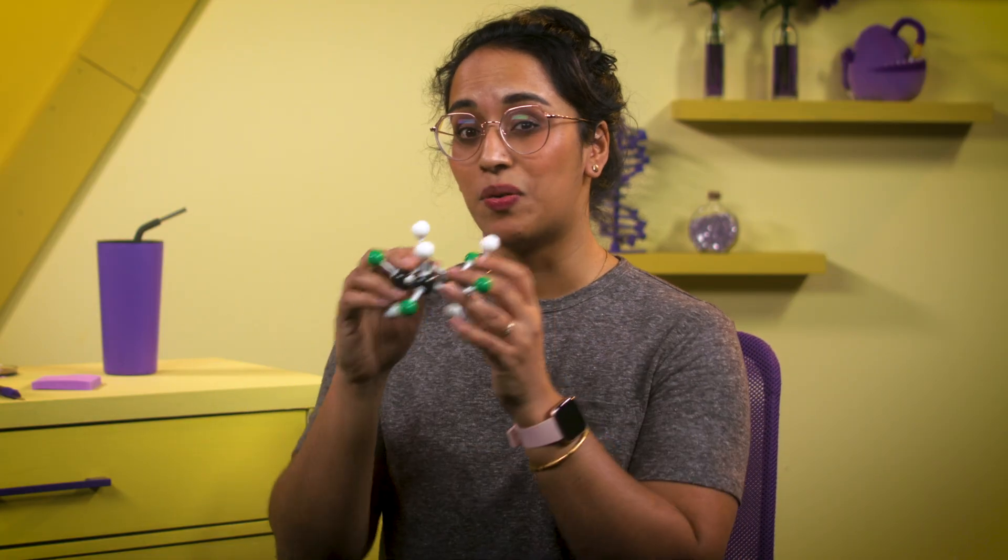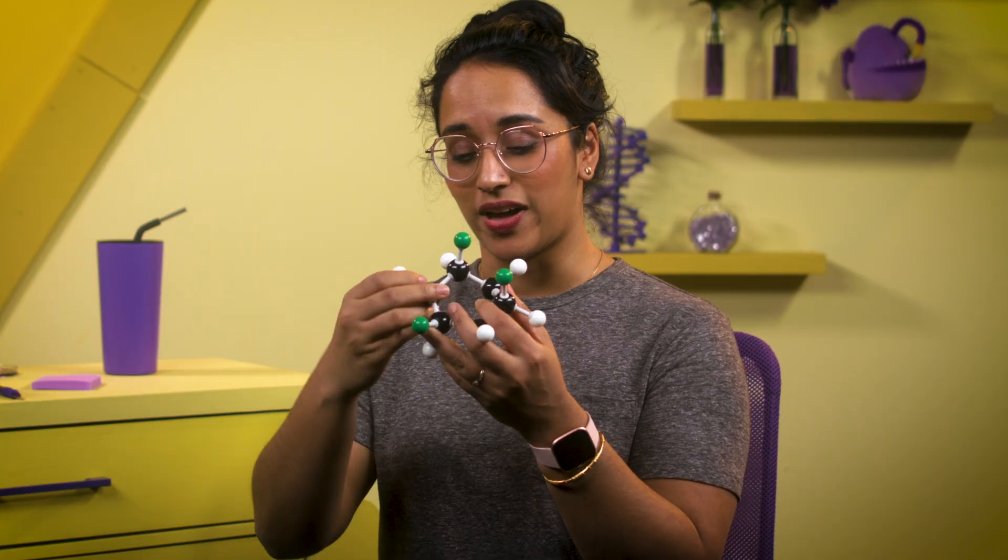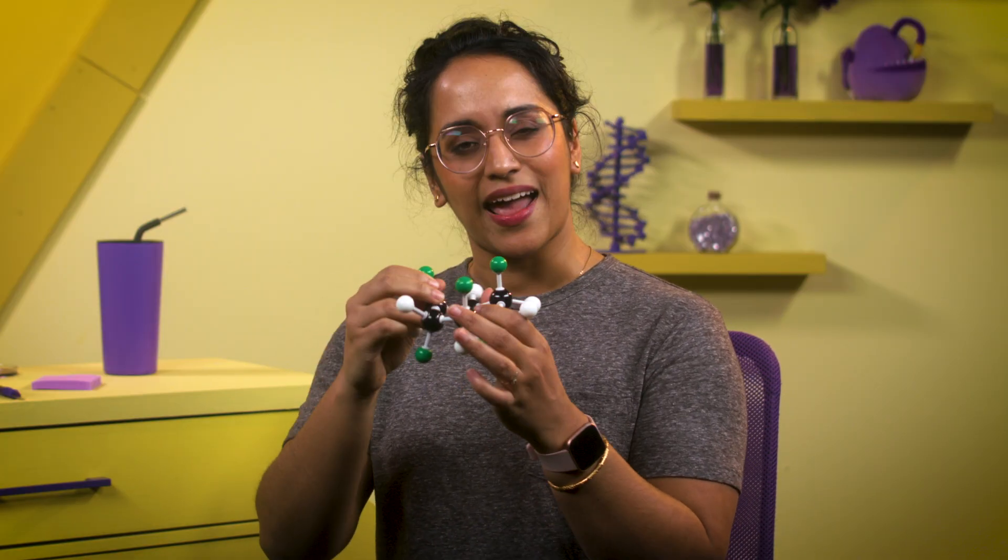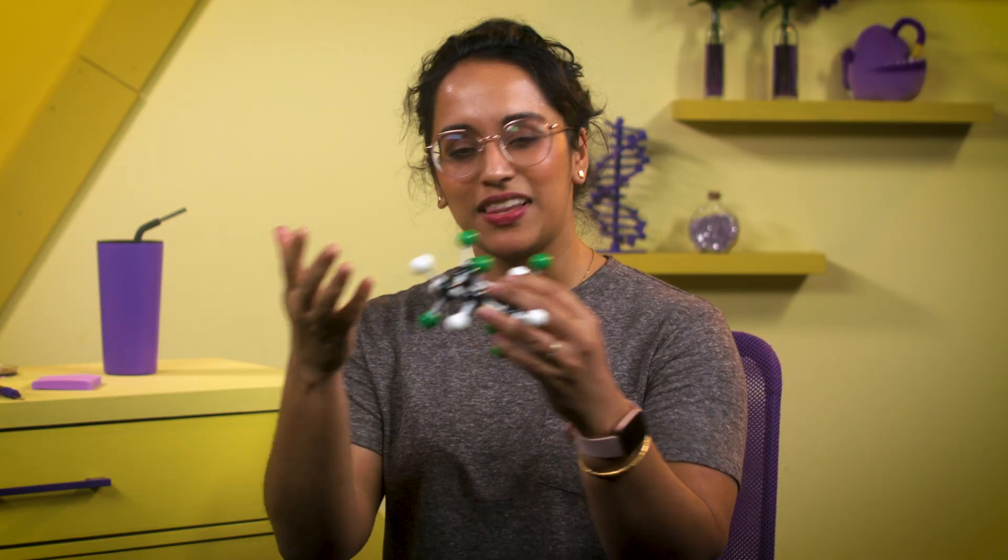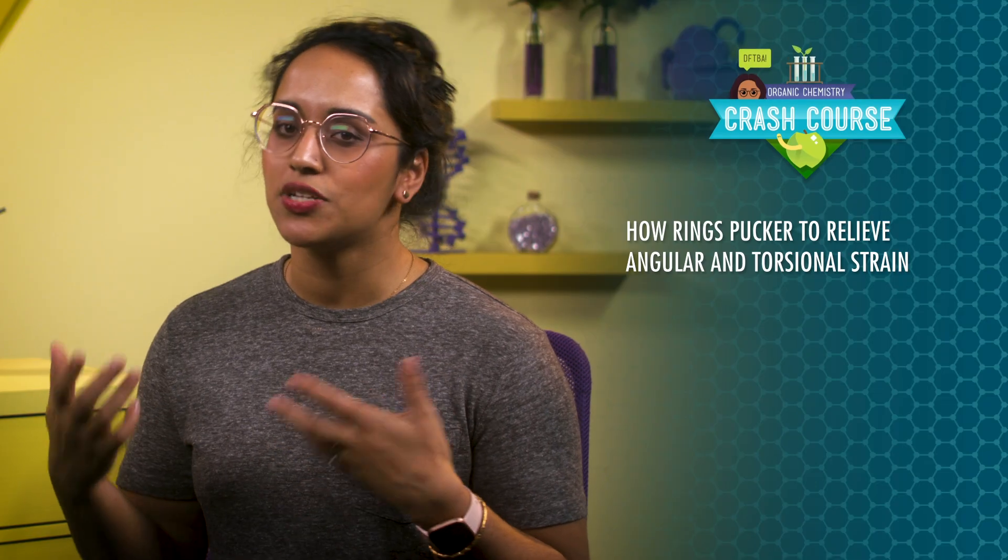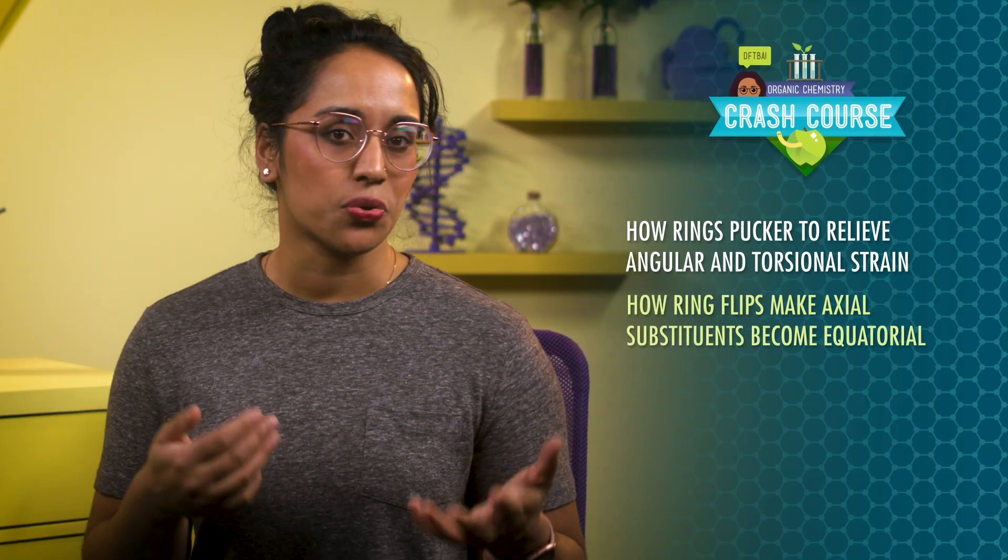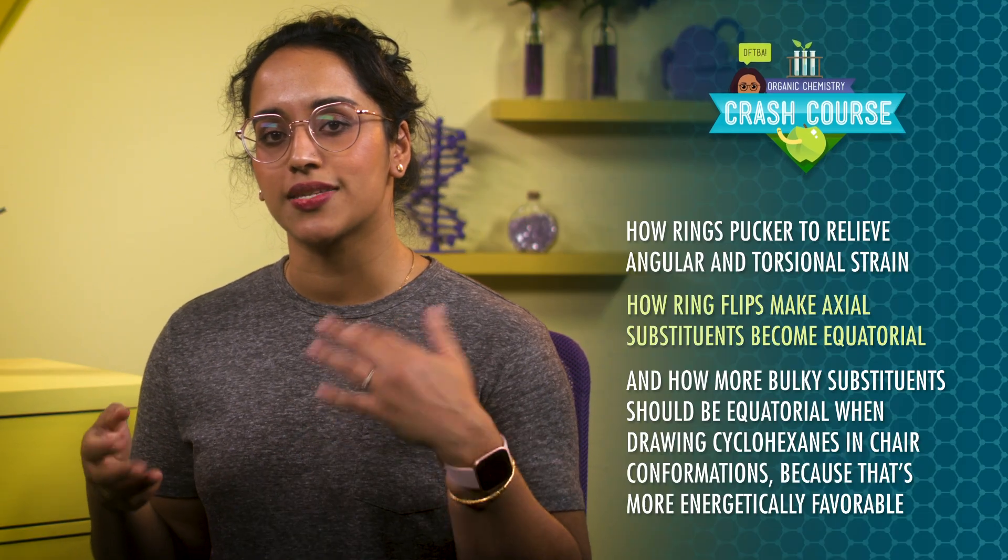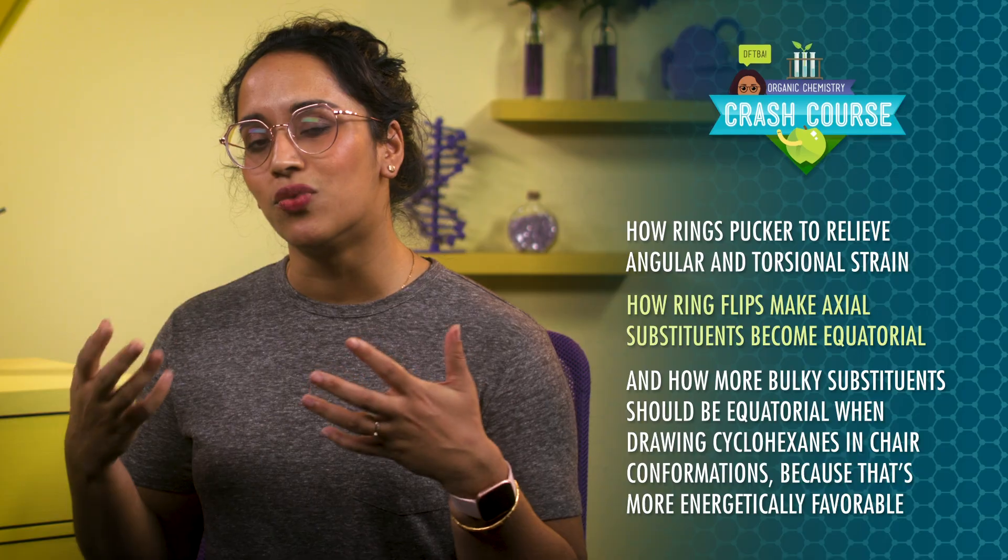So the big takeaway in today's episode is to practice. It helps to practice drawing cyclohexanes, but if you have a model, that's even better, because you can actually change the positions of all the hydrogens and see them go from equatorial to axial, and you also get to play with the toy and see chemistry more visibly. And it's okay if all this chair stuff doesn't make any sense immediately. It's hard to wrap your head around and takes a lot of practice. But it's really important to know our cyclohexanes. These organic molecules show up in carbohydrates, steroids, plant molecules, pesticides, and so many other things. And the conformation is so important to the function of these molecules. Today we talked about how rings pucker to relieve angular and torsional strain, how ring flips make axial substituents become equatorial, and how more bulky substituents should be equatorial when drawing cyclohexanes in chair conformations, because that's more energetically favorable.